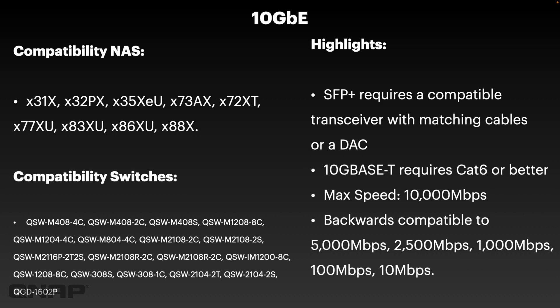SFP+ requires a compatible transceiver with matching fiber cables for 10 gig fiber. Or you can use a DAC — a direct attach cable — which is a copper cable with ends that plug into the fiber port, acting as a converter to send the signal down copper. DACs are much cheaper in some cases but only work over shorter distances, making them ideal for cabling within a rack cabinet. For longer distances, you'd use SFP+ with different transceivers for different cable types. We supply both transceivers and DAC cables.